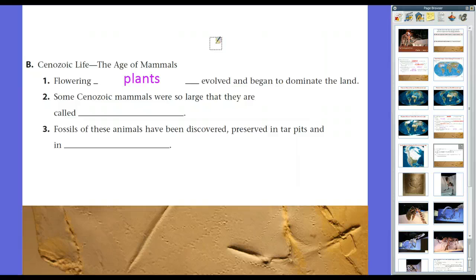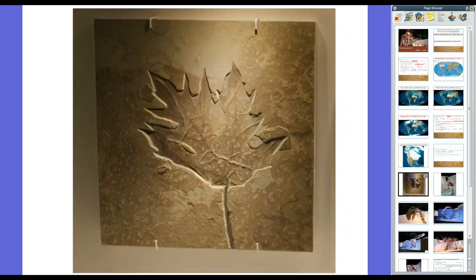After the extinction event, most large plants and most large animals were wiped out. And so smaller plants, like flowering plants, began to take over. And then also deciduous trees. In other words, trees that lose their leaves every year. See, actually, this is from the early Cenozoic era. Does it look familiar? Well, it's actually a fossilized maple leaf from early in the Cenozoic era. I think about 40, 50 million years ago.